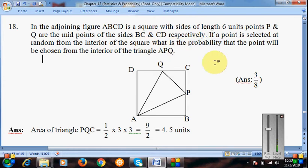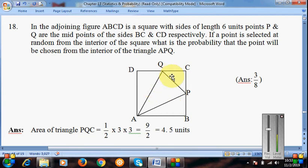The question asks: what is the probability that a point will be chosen from the interior of triangle APQ? We have one square and the square has all sides of 6 units each, and we have to choose a point from the square.